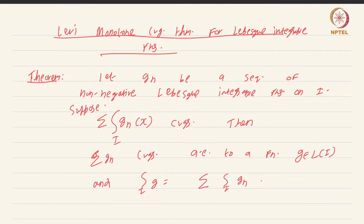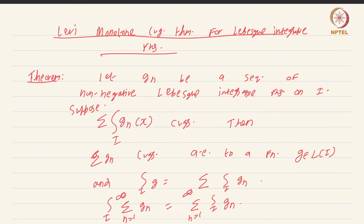What you expect is actually holding true. To highlight the importance of this result, we can write it like this: the integral over I of the summation from n equals 1 to infinity of g_n is equal to the summation from n equals 1 to infinity of the integral over I of g_n. We have interchanged the summation and the integral, and such results are going to be very powerful.